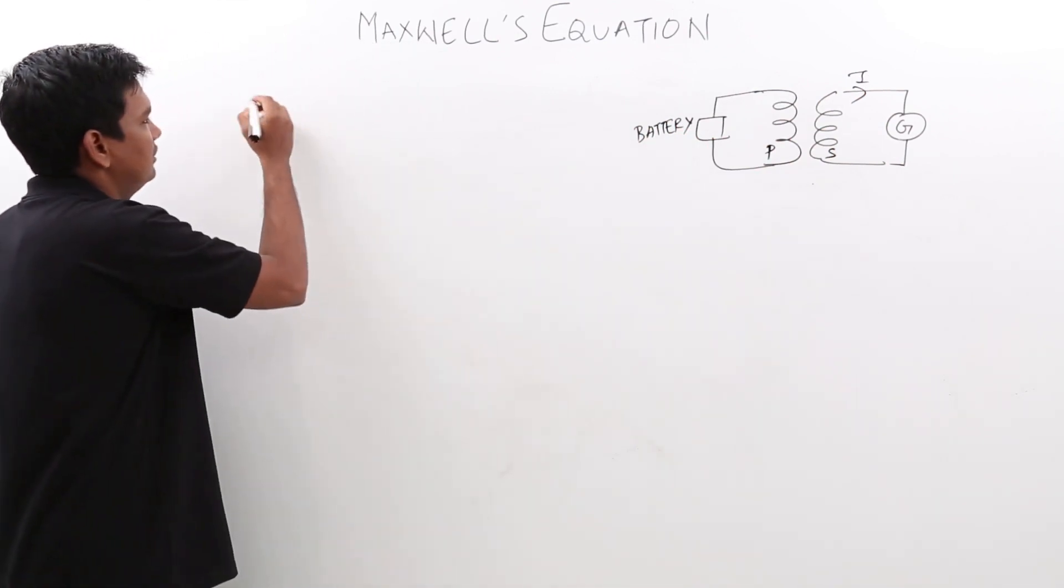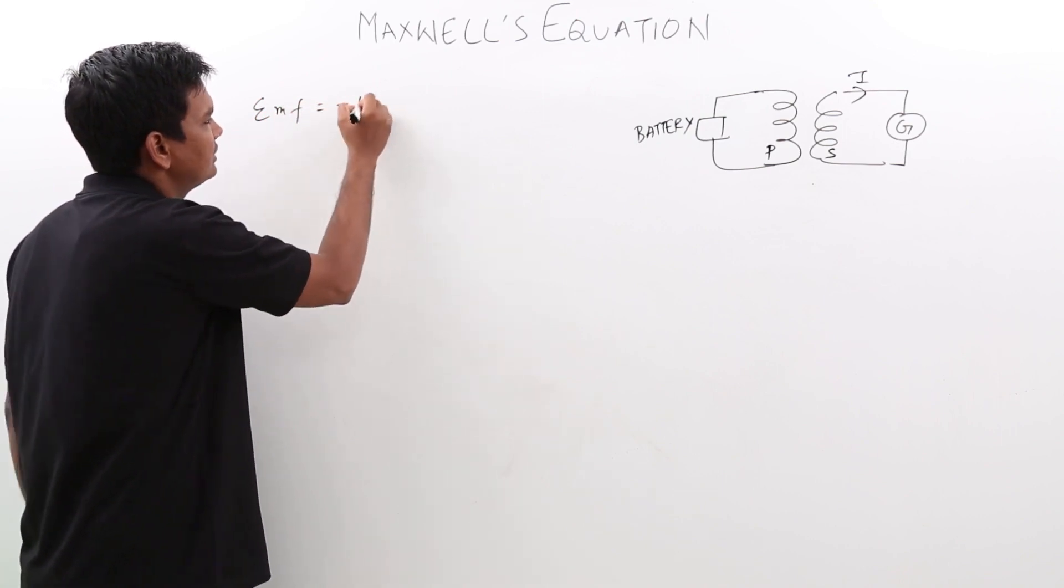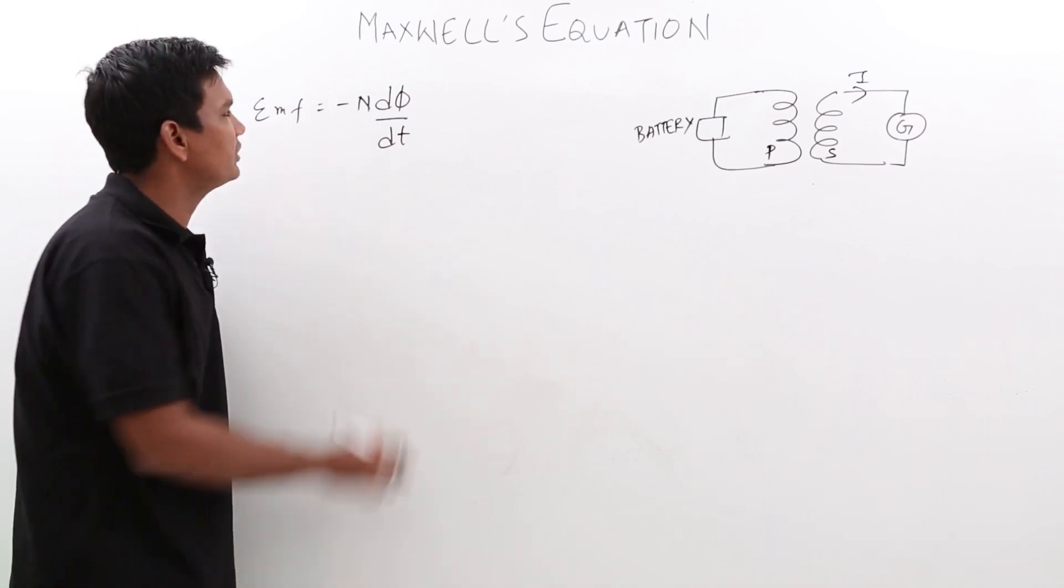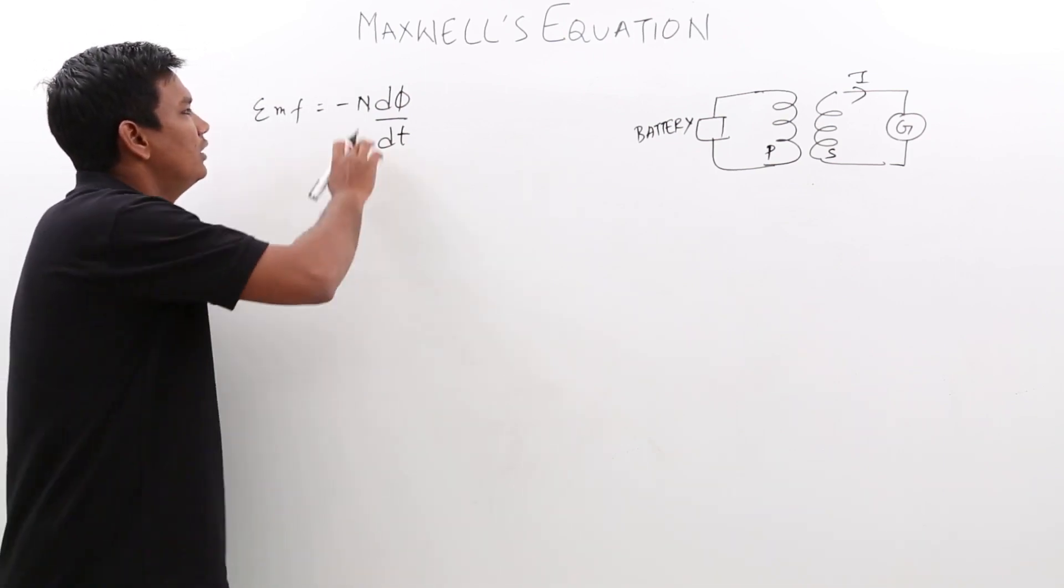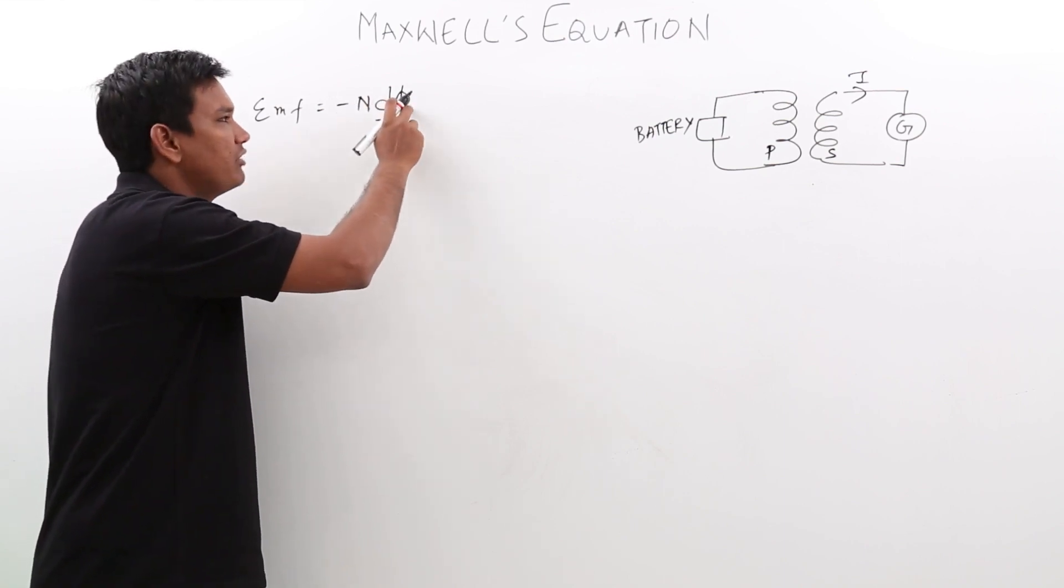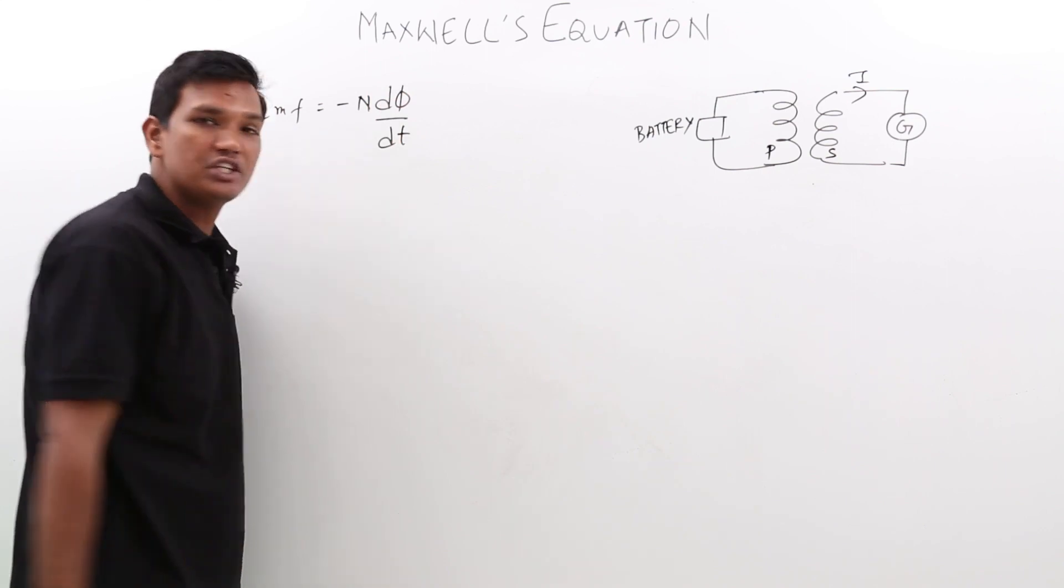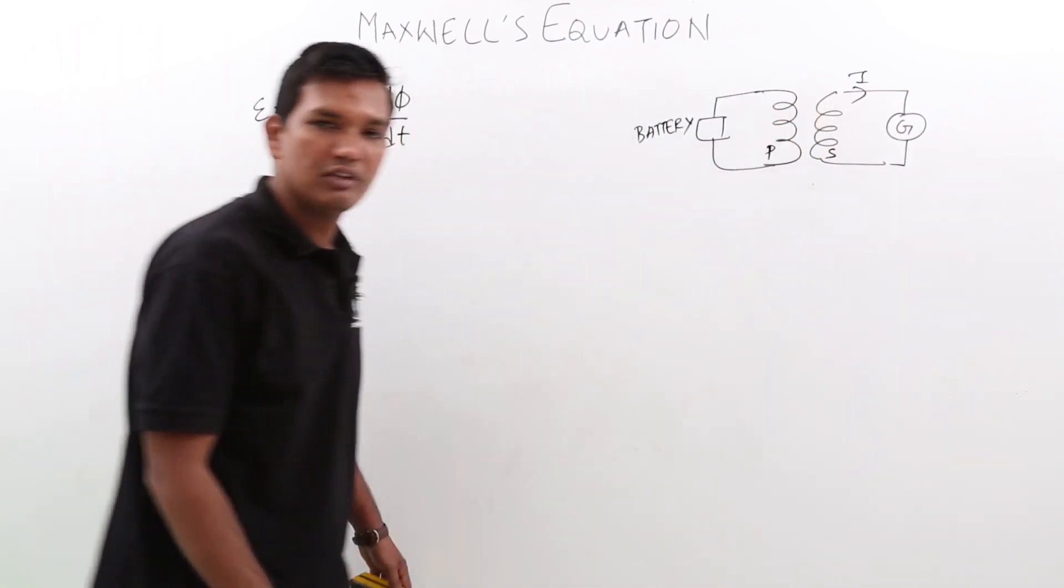That EMF is given by minus N dφ/dt. This is one of the very popular equations we have seen in the dual standard. Where N is the number of turns, φ is nothing but the flux linkage and we are talking about rate of change of flux, at what rate the flux is linking.